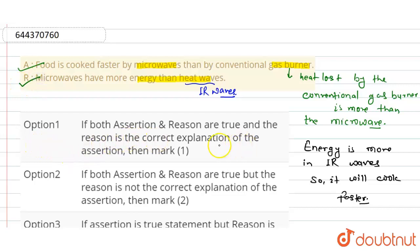Both assertion and reason are true and reason is the correct explanation of the assertion. So option first is the right answer.